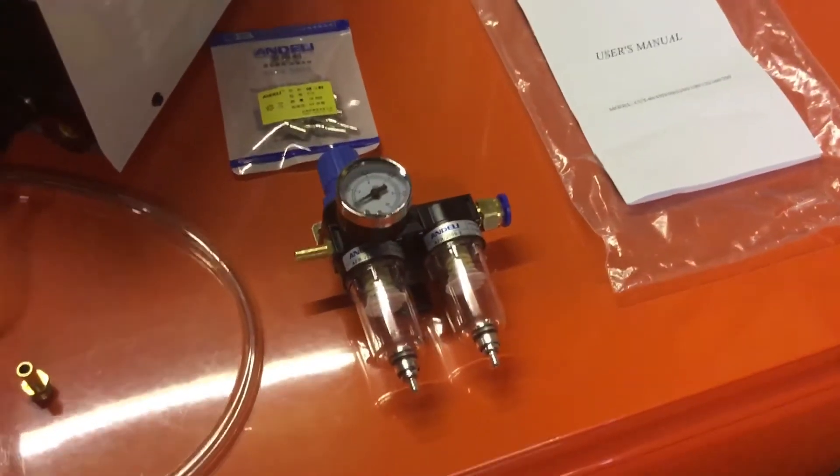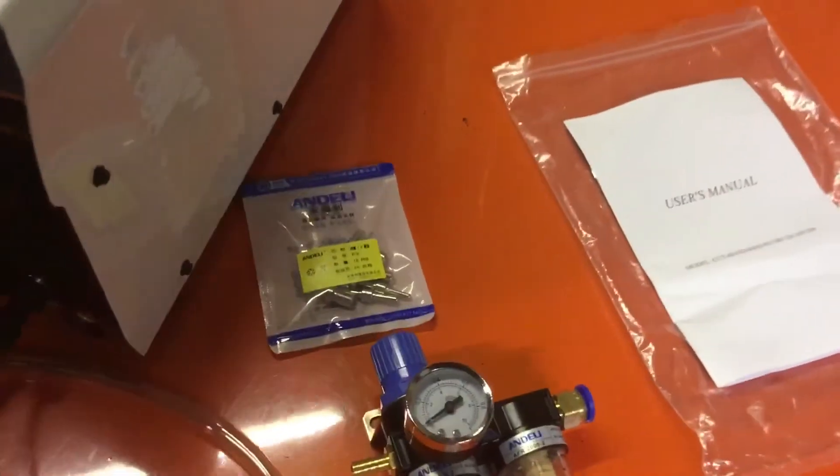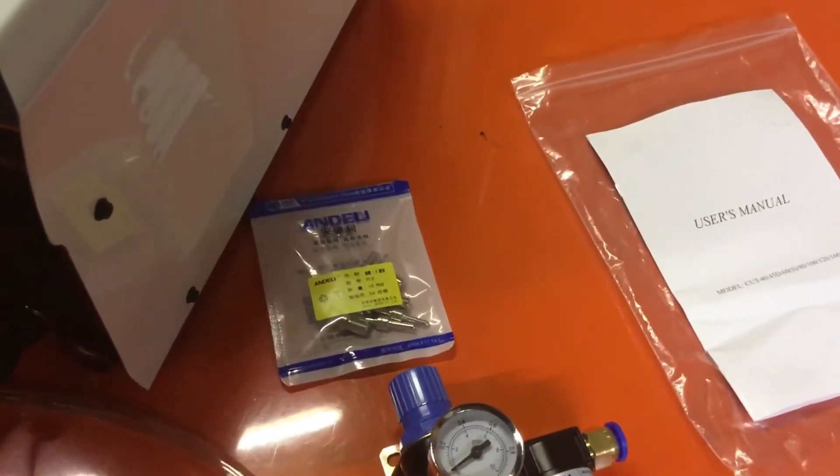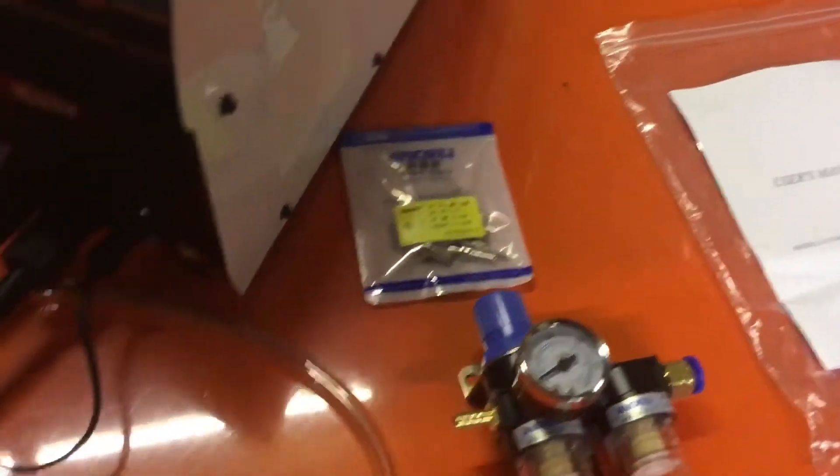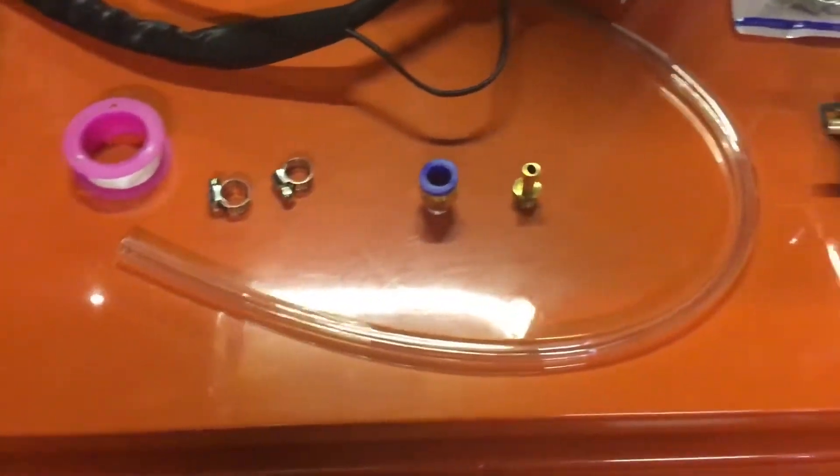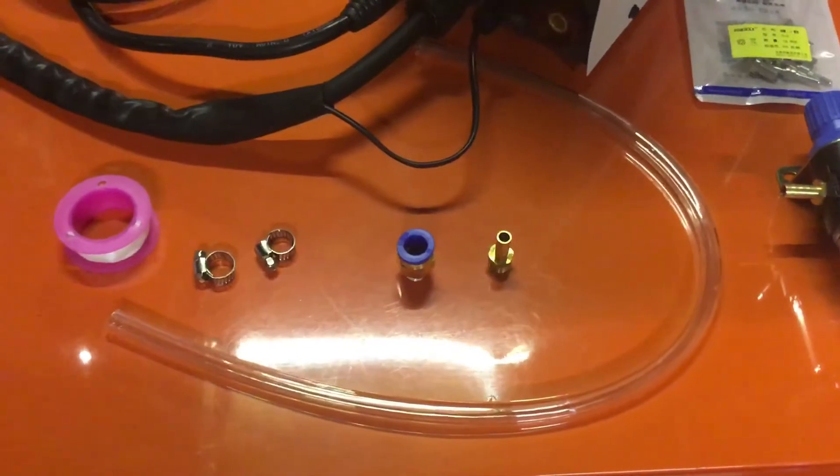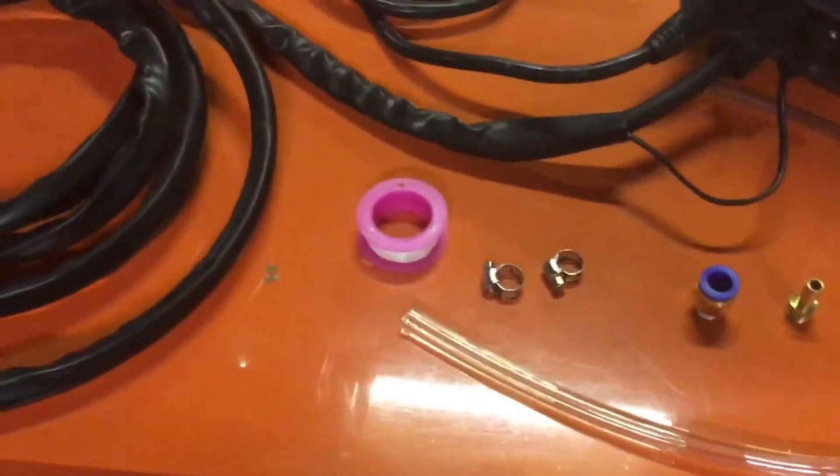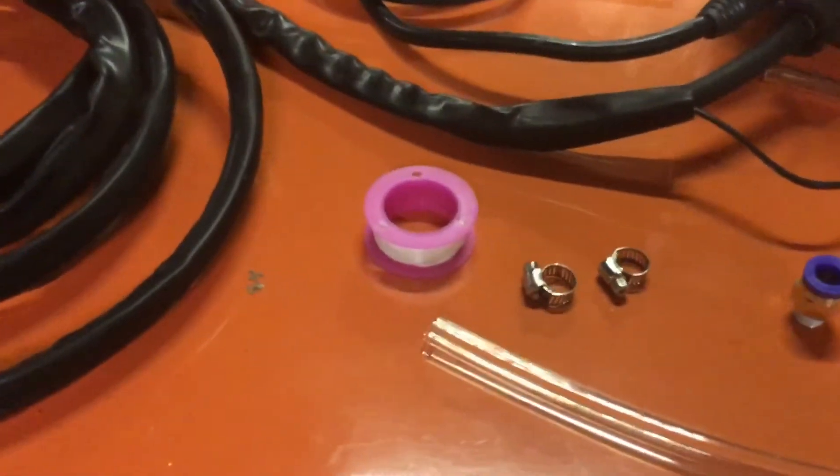It comes with a water trap, pressure regulator, some other bits in a bag that I presume are for the cutting nozzle, a little bit of hose to connect the water trap to the back of the unit from the airline, some hose clips, and even some thread tape.